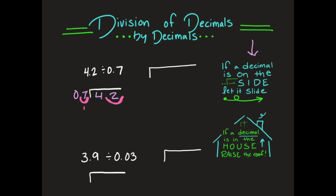I'm going to rewrite my problem for what I have now after sliding my decimal points. I have 7 on the outside, and I have 4 and 2 with my decimal point moved. From our previous lesson — if a decimal is in the house, raise the roof — so I put that decimal point straight up into my answer. Now I have 42 divided by 7. 7 can't go into 4, but 7 can go into 42 — that's 6 times. 6 times 7 is 42, subtract and you have 0. Your answer is 6.0, which is really just 6 and 0 tenths.